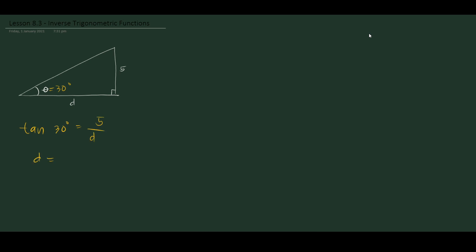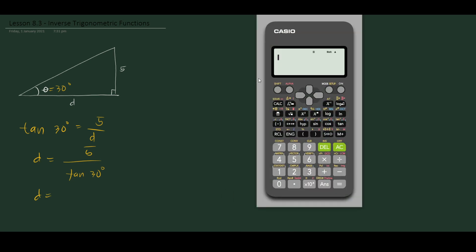So d is equal to 5 over tangent 30 degrees. Let's take out our calculator and compute 5 divided by tangent 30 degrees, which gives us 5 square root of 3.